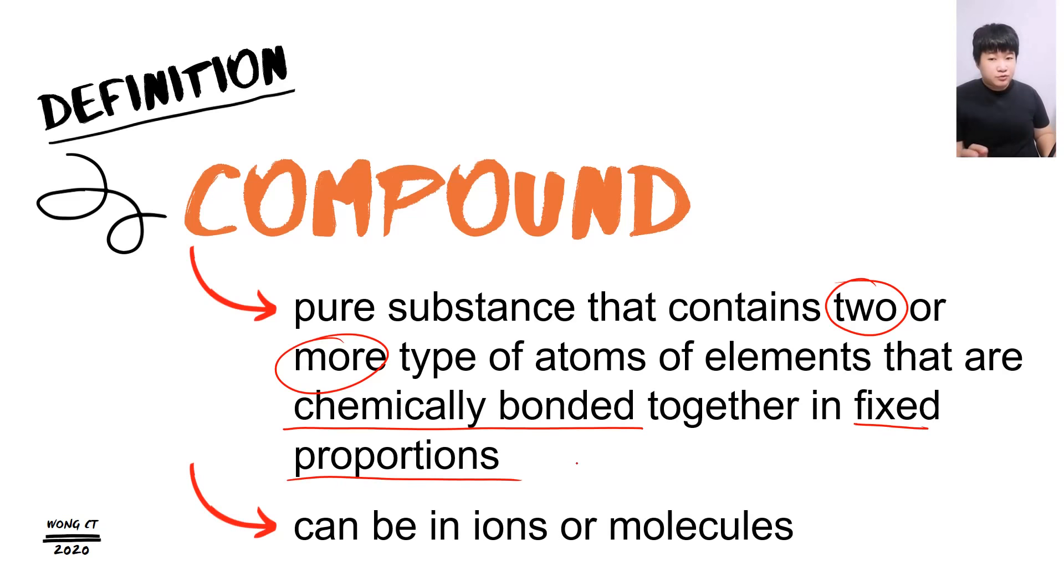And we have two types of compound in the form of ion or in the form of molecule. Go back to the carbon dioxide just now. Carbon dioxide is a compound. Carbon dioxide is a compound. Why? Because we have two type of atom. One carbon and two oxygen atom. Another example of molecular compound is water. Water consists of two hydrogen atom and one oxygen atom. So we have two types of atom.